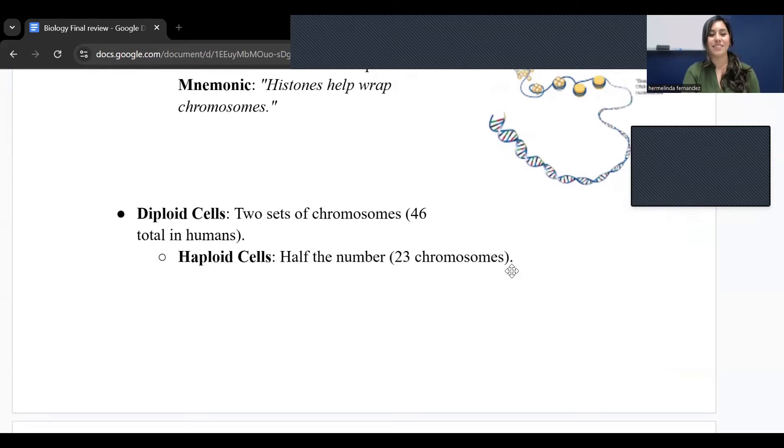Now we have diploid cells. Diploid, think of that prefix di - di is two. Diploid cells have two sets of chromosomes. In our human body we have 46, so there's two sets of those. Haploid cells, think of haploid for half of the cells or half of the number, so that would be 23 chromosomes.